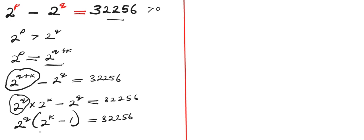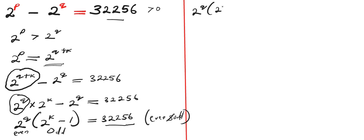Now, 2 to the power of q, or 2 to the power of any number, will give you an even number. And 2 to the power of any number minus 1 will give you an odd number. So this factor is even and this factor is odd. We need to split 32,256 into two parts — one even and one odd. We can use 512 times 63, because 512 times 63 equals 32,256. Here, 512 is even and 63 is odd.